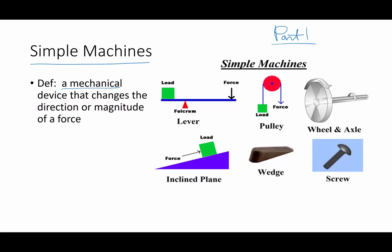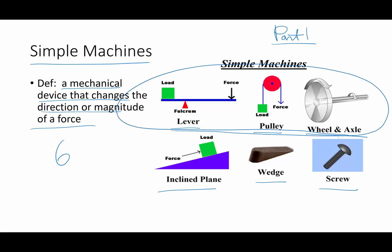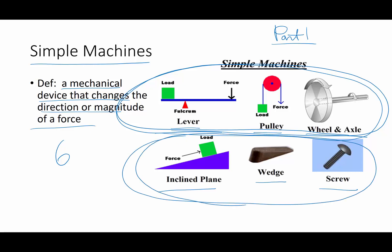A simple machine is a mechanical device that changes the direction or the magnitude of the force. There are six basic types of simple machine: the lever, the pulley, the wheel and axle, the inclined plane, the wedge, and the screw. These three — lever, pulleys, and wheel and axles — are kind of cousins of each other. And inclined planes, wedge, and screw are all very closely related. We're going to spend a little time talking about each of these.